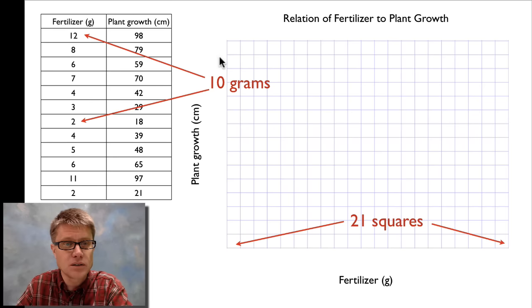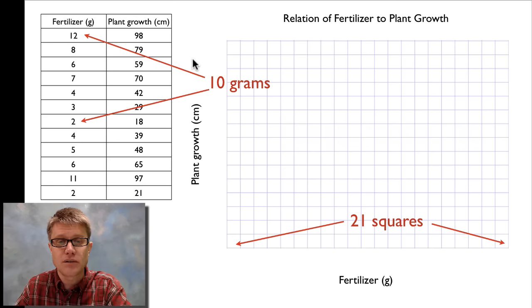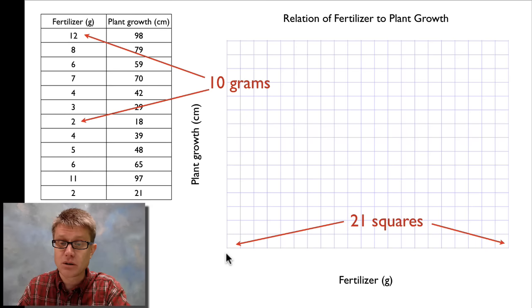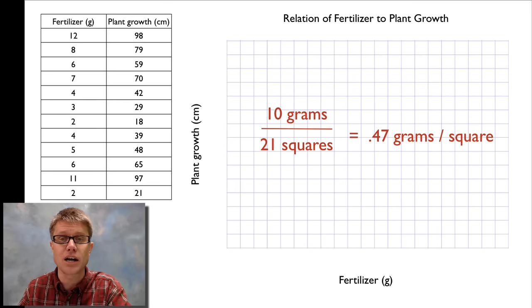Then I look at the range. You can see here that my fertilizer values go from 2 to 12, and so I have a spread of 10 grams that I want to make sure I'm able to graph. Now students have a tendency to want to put the number 0 here. But since 0 is not in my data set, I don't want to include 0 on my graph. I want to use all of the graph paper. A quick way to do this: if I divide the number of grams by the total number of squares, that tells me basically how many grams per square.